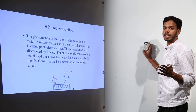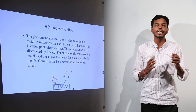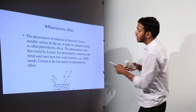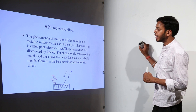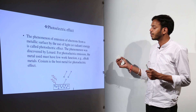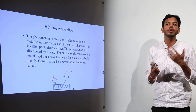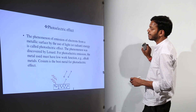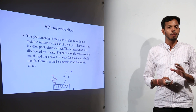Photoelectric effect is the phenomenon of emission of free electrons from a metallic surface by use of light or radiant energy. The phenomenon was discovered by Lennard. For photoelectric emission, the metal used must have a low work function — because the lesser the energy required to reach the metal surface, the greater the emission of electrons. The best examples are alkali metals; cesium is the best metal for the photoelectric effect.